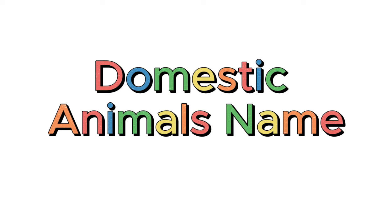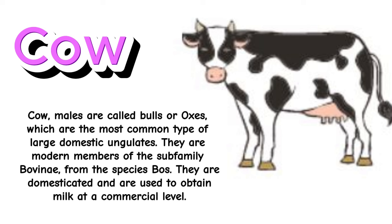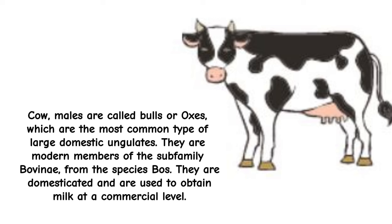Domestic Animal's Name. Cow. Males are called bulls or oxes. Cows are the most common type of large domestic ungulates. They are modern members of the subfamily Bovinae from the species Bos. They are domesticated and are used to obtain milk at a commercial level.